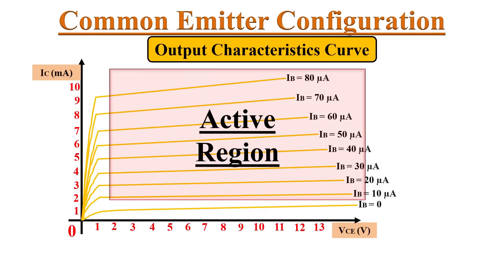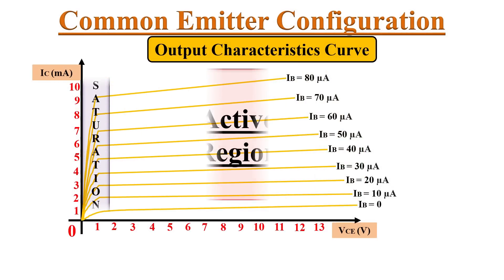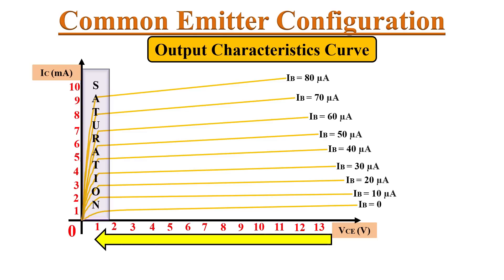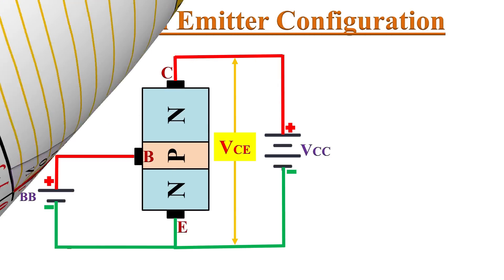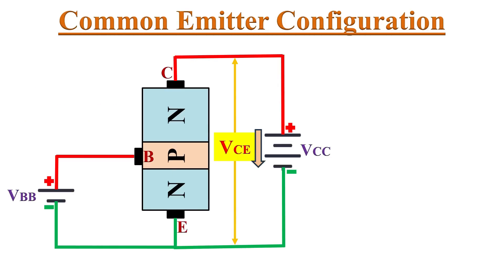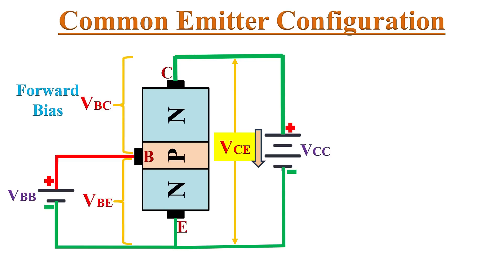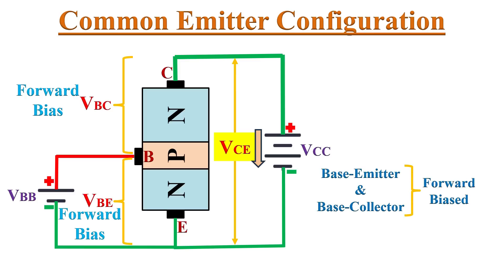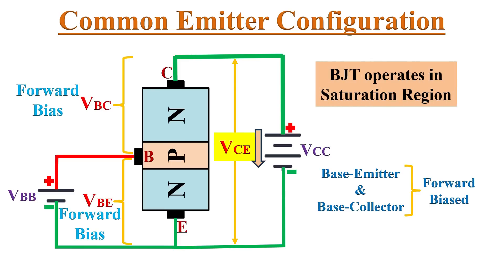Now let's discuss the second region of operation — the saturation region. If you observe the curve, as the value of VCE reduces and gets closer to zero, the collector current IC increases very sharply. This is because whenever VCE reduces to zero, the base-collector junction becomes forward biased. At that point, both junctions of the BJT — base-to-emitter and base-to-collector — are forward biased. In this condition, the BJT operates in the saturation region, as we can see in the curve.